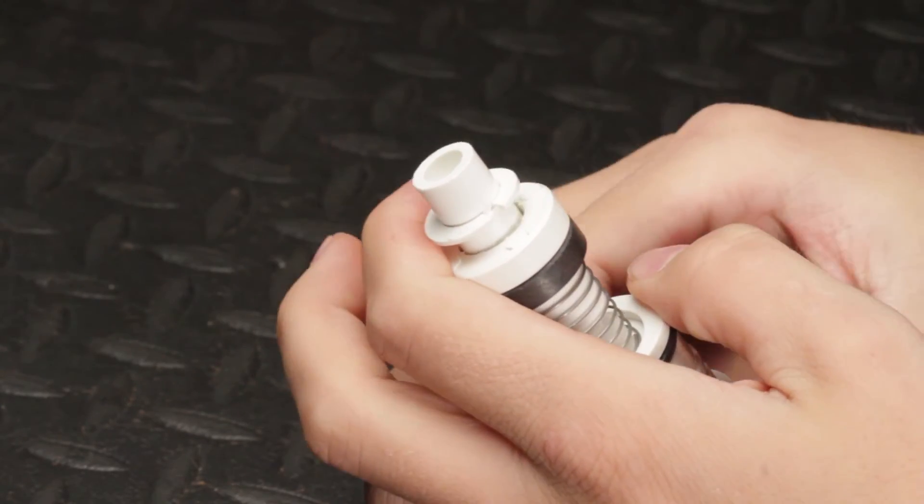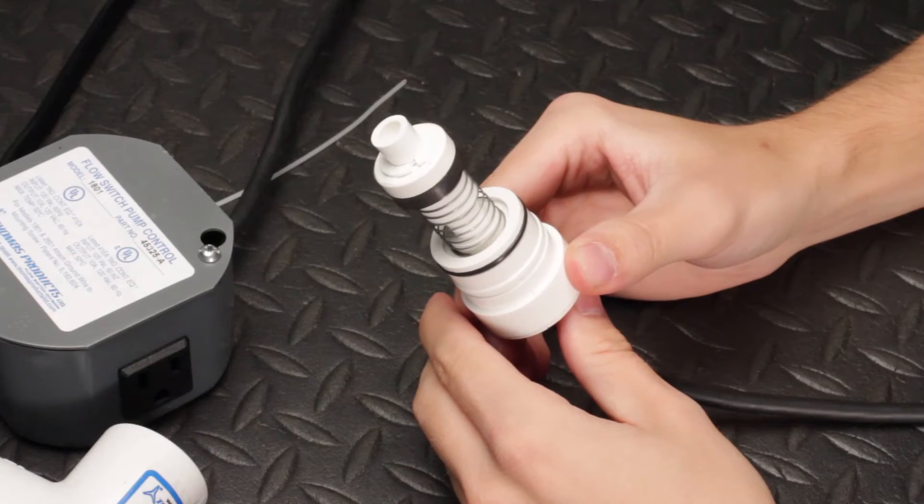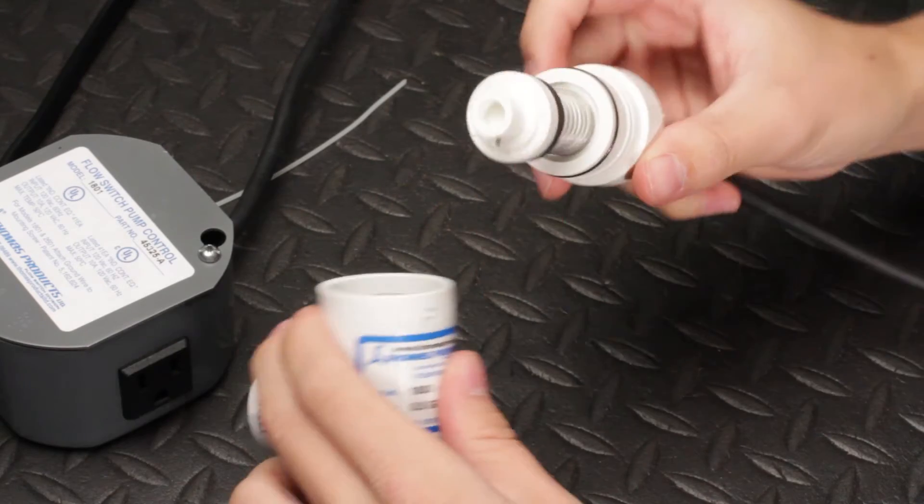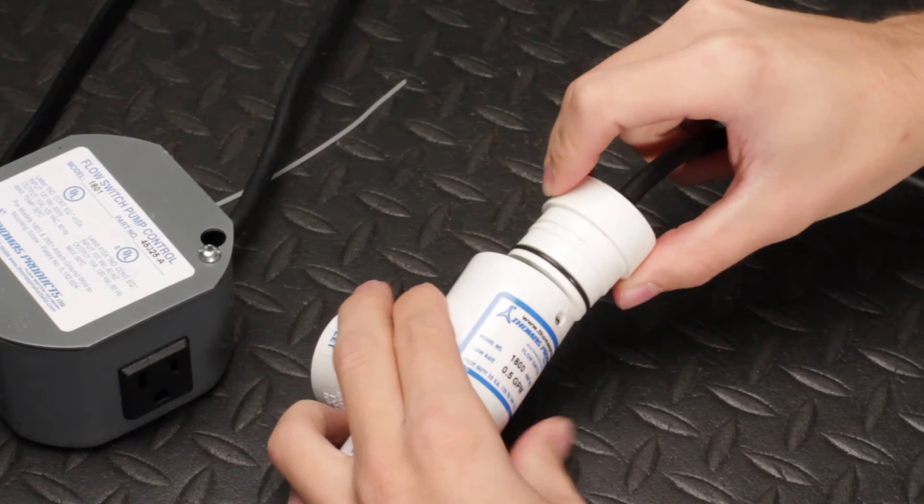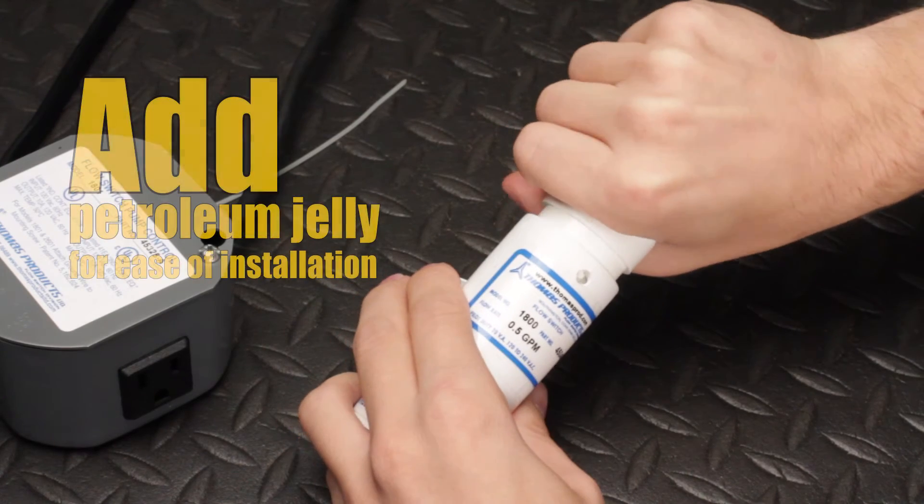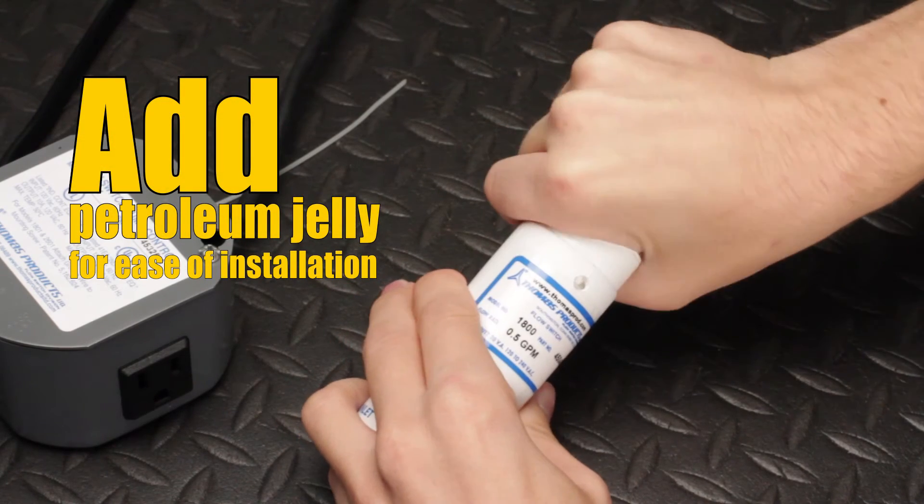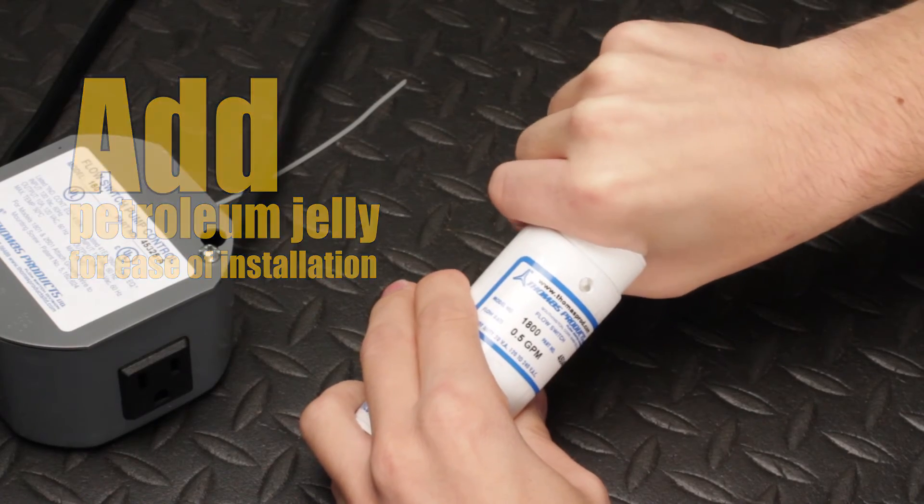Next, reinstall the locking clip, being careful as to not deform its shape. Next, reinstall the bonnet assembly into the body. It helps to add a light amount of petroleum jelly onto the o-ring for ease of installation. Twisting it slightly will help get it into position.